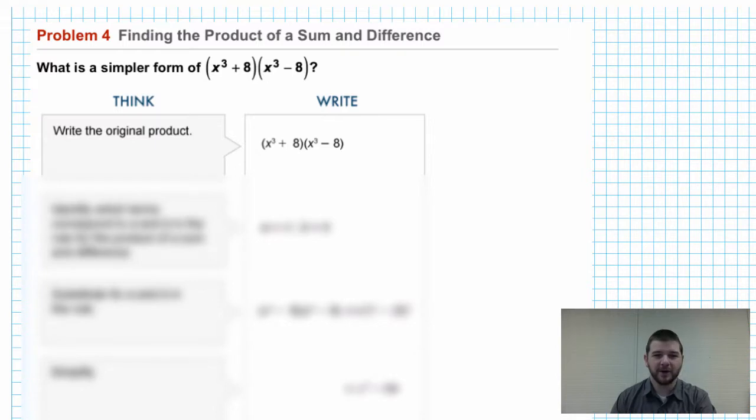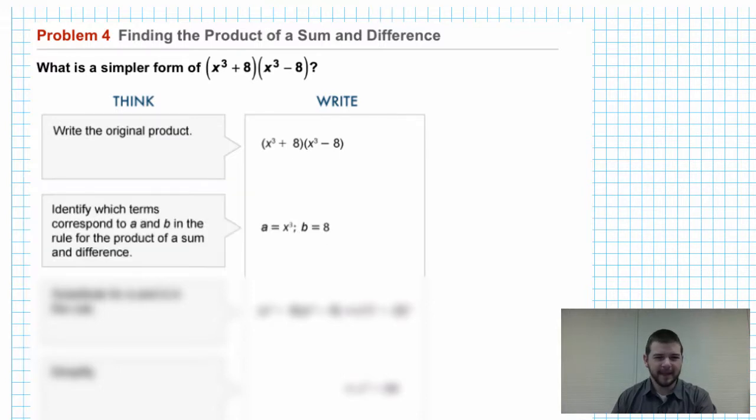So first, write the original product. Some of you may call this rewriting the problem on your page. Identify which terms correspond to A and B, which I've referred to as the first and the second term in the rule for the product of a sum and difference. So this just means consider this rule that we've now learned. And in this case, A will equal X cubed, B will equal 8.